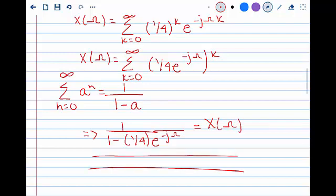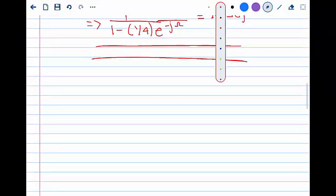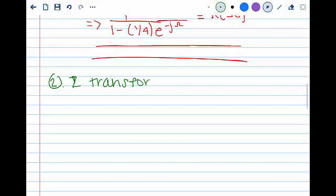This solves this portion of the problem. The other way, as we mentioned earlier, to solve a DTFT involves finding the Z-transform. So for the same sequence, X[K] equals (1/4)^K times the unit step of K, we start out by finding what this relates to in our Z-transform table.